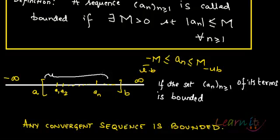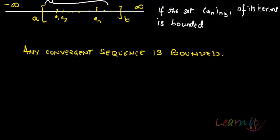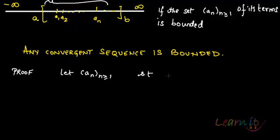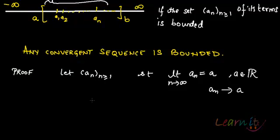Now there is a very close relationship between convergence and boundedness. Any convergent sequence is always bounded. Let's try to prove it. Let us start with a sequence a_n such that the limit as n tends to infinity of a_n equals some finite real number a. So we are saying a_n tends to a.